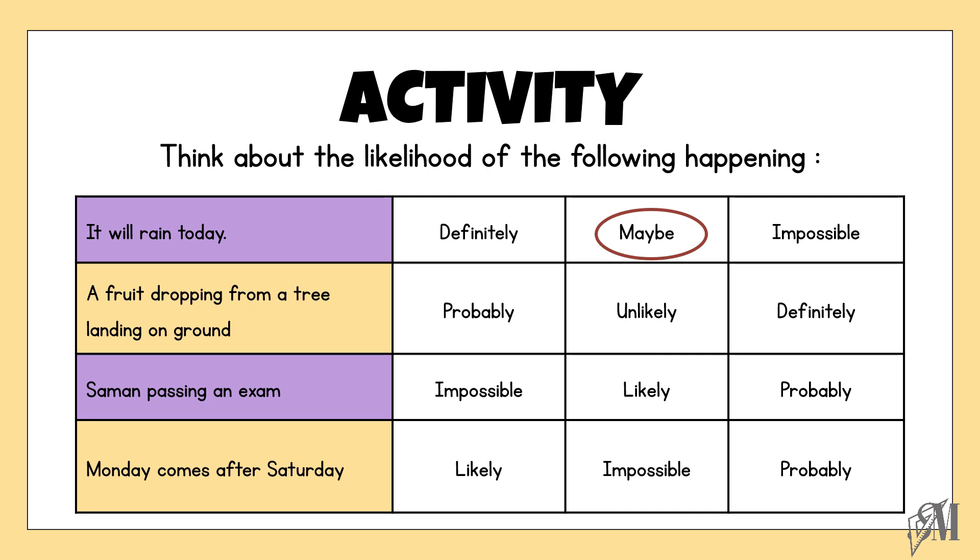A fruit dropping from a tree landing on ground. We know a fruit dropping from a tree must definitely land on the ground, so it is a definite event.